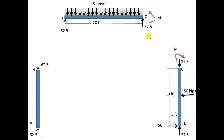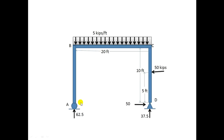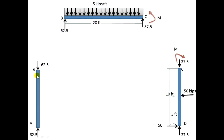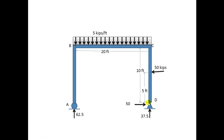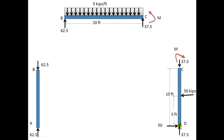The 62.5 kN reaction acting upward at A will act downward on the separated member, and the 37.5 kN acting upward at D will be transferred accordingly. The moment at the joint is clockwise on one side and counterclockwise on the other to maintain equilibrium. This is how we separate the members of the frame and transfer forces and moments between them.